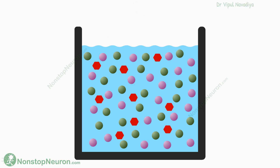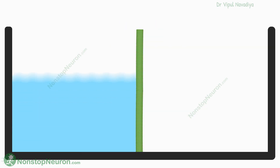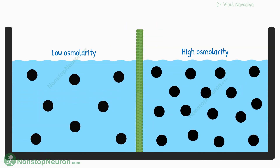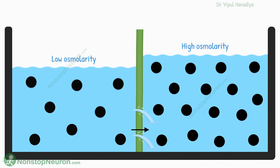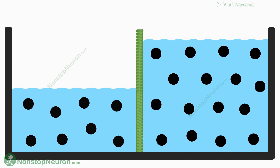Before we do that, let's quickly revise some basics about osmolarity and osmosis. In simple words, osmolarity is the collective concentration of all the solutes combined. If two solutions with different osmolarity are separated by a membrane that is permeable to water only, the water moves from low osmolarity to high osmolarity. This movement keeps happening until the osmolarity of both fluids becomes equal. This process is called osmosis.